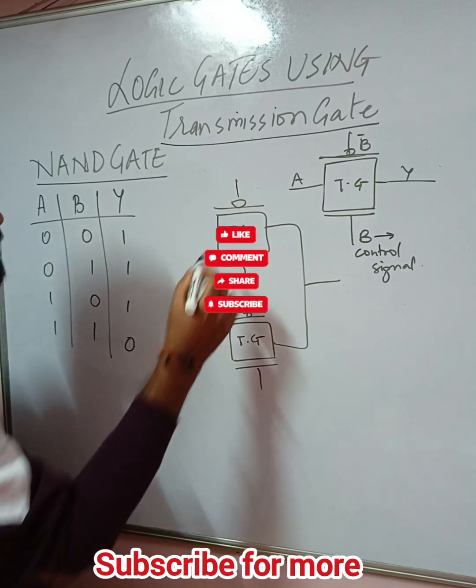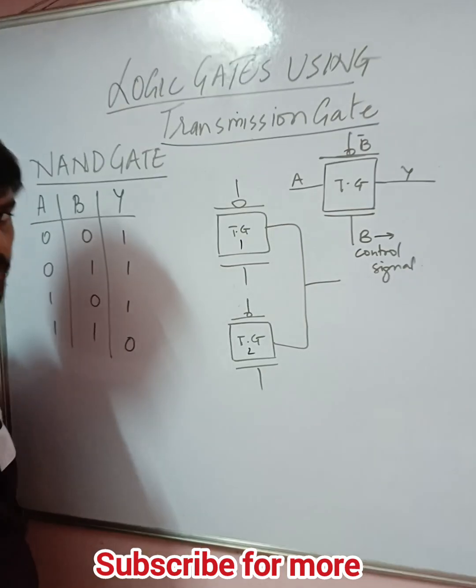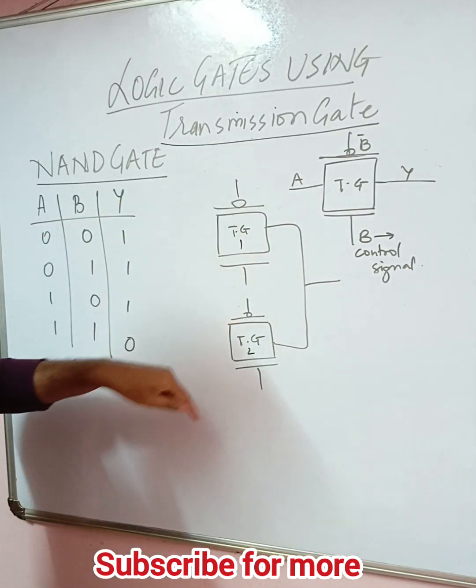That is why we have two transmission gates - transmission gate 1 and transmission gate 2. Now based on the input we will be designing the circuit.